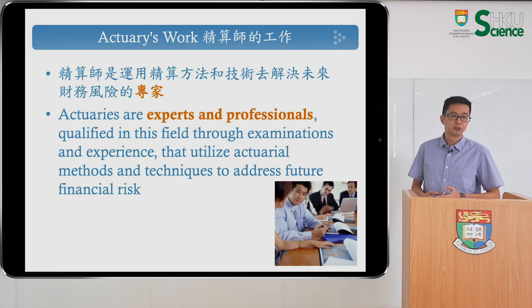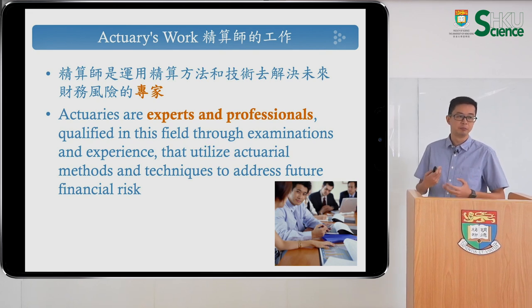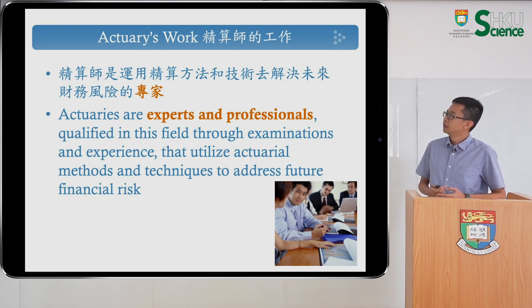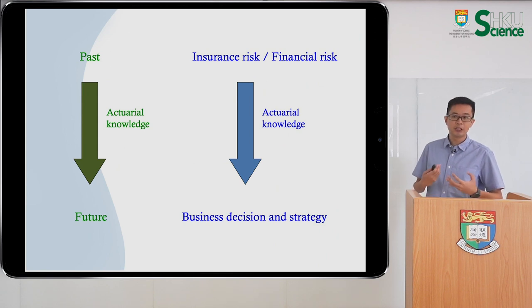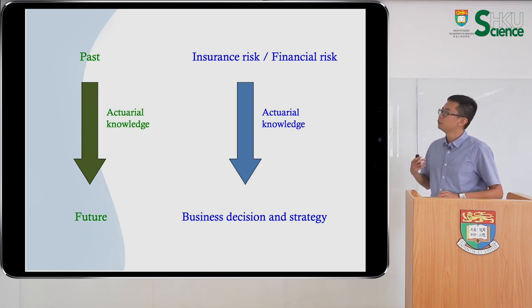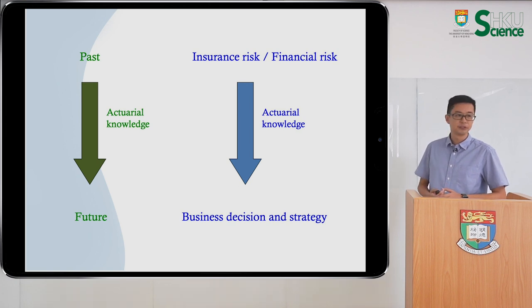What are actuaries? They are experts and professionals qualified in the field through examinations. You have to pass professional examinations in order to be a qualified actuary. You will use actuarial methods and techniques to assess and manage future financial risk. In a nutshell, actuaries use past information to predict the future. In the financial context, we face insurance risk and financial risk, and we use our actuarial knowledge to help companies make business decisions and strategy.